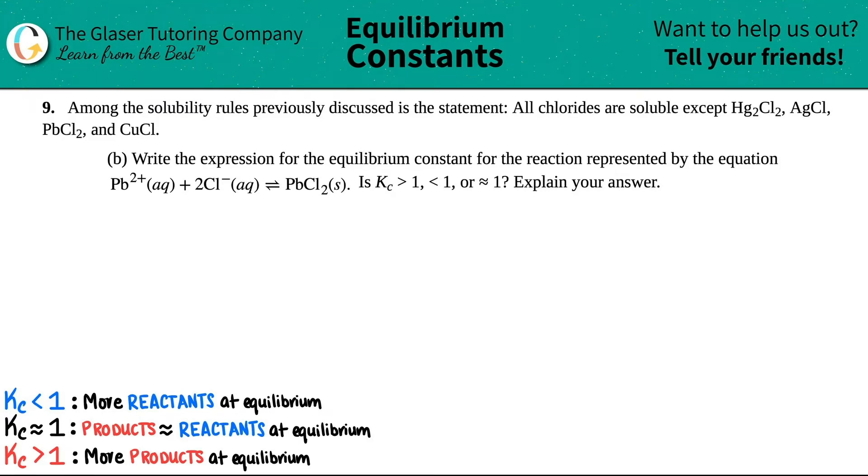Number 9. Among the solubility rules previously discussed is the statement, all chlorides are soluble except for these four exceptions: Hg2Cl2, AgCl, PbCl2, and CuCl.